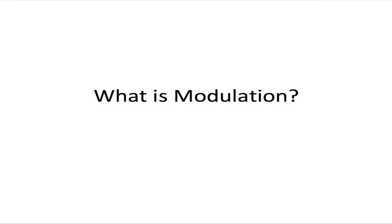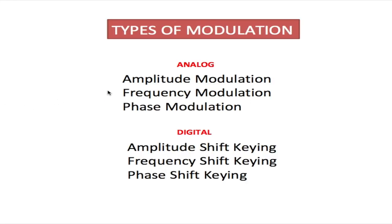In this video, I'll talk about the different forms of modulation, how they work, and how modulation is applied to devices which change our daily lives. There are three types of modulation. First, the analog form: amplitude modulation, frequency modulation, and phase modulation. Underneath, we have the digital type of modulation. You'll notice they're all referred to as amplitude, frequency, and phase — however, the word 'modulation' is changed to 'shift keying.' So whenever you're talking about digitally modulating a signal, you refer to it as shift keying.